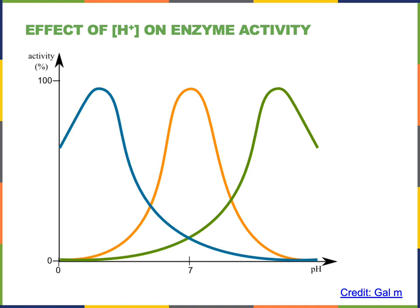Enzymes function at an optimal pH that is typically the pH of the environment where they are functioning. For example, there are enzymes produced in our stomach that have an optimal pH of around 2, because the environment of the gastric juice in our stomach is a low pH. Enzymes that function in our blood will have an optimal pH of around 7.4, the pH present in our blood.